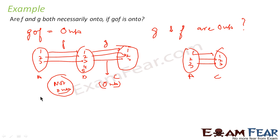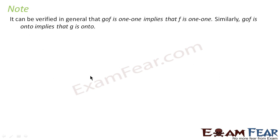So if you are adding more elements here, f is not onto, but the composite gof is still onto because there is no extra element unmapped at the end. Thus, if gof is onto, it does not necessarily mean that both g and f have to be onto — f can be non-onto.